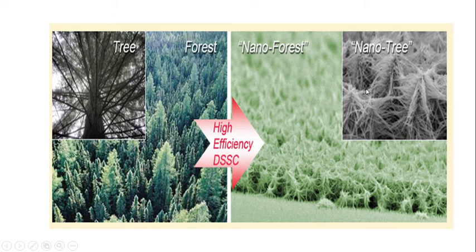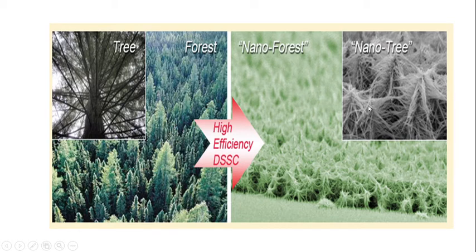What is the benefit of having branches and sub-branches for the nano ZNO forest? Because if you have more number of branches and sub-branches, the surface area increases, and automatically the efficiency of the solar cell increases. For this purpose, the branches of the ZNO backbone are increased and sub-branches are also increased.